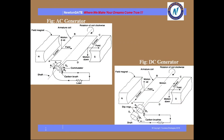Next comes the descriptive type of question. For questions like AC generator and DC generator, they will ask you to write the working principle and mechanism, and you have to explain the mechanism by drawing a proper diagram. Without a diagram you are not going to get full marks. The diagram of AC and DC generators is very important — you must practice this before your exams.